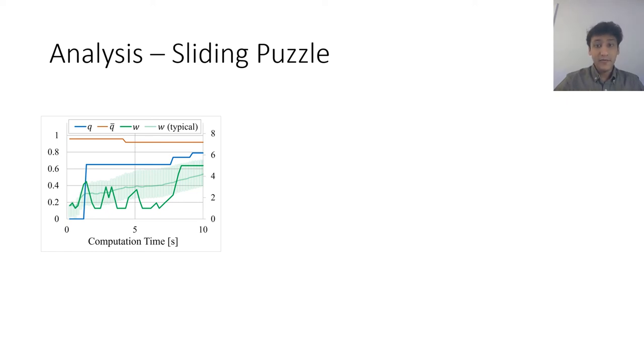Then as the deadline is approached, it increases the weight rapidly to find more solutions quickly. The faded green line shows that the weight is adjusted in a similar way on most episodes.